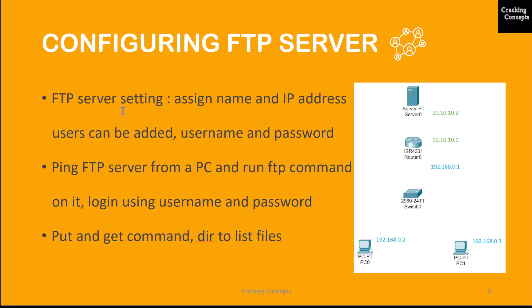Next, we will set up the FTP server. We will first set its name and IP address, and for further security there is an option to add users with a username and password to access the server. You can either use the existing default username and password or create a new one, and permissions can be assigned accordingly. Then we ping the PC and the server to check if the server connection can be made.